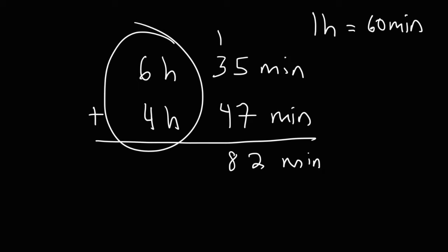Let's add these numbers. 6 plus 4 is 10. So we have 10 hours and 82 minutes. Now, we need to take away 60 from this number because it exceeds 60.